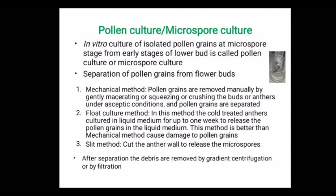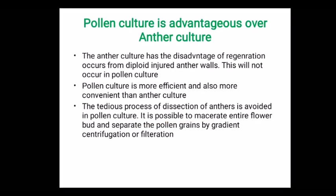After separation, the debris are removed by gradient centrifugation or filtration methods. Pollen culture has advantages over anther culture. Anther culture has the disadvantage that regeneration can occur from diploid injured anther walls; since microspore culture is devoid of anther walls, this problem does not occur. Pollen culture is more efficient and convenient than anther culture, and the tedious process of dissection of anthers is avoided. We simply collect immature flower buds, macerate them, and collect pollen grains by centrifugation or filtration.